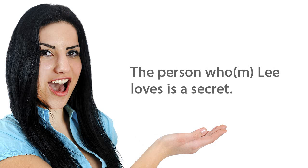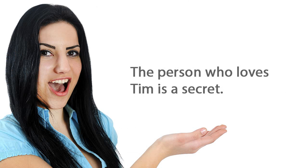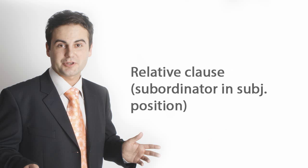The person whom Lee loves is a secret. This is a relative clause with the subordinator in object position. The person who loves Tim is a secret. This is a relative clause with the subordinator in subject position.